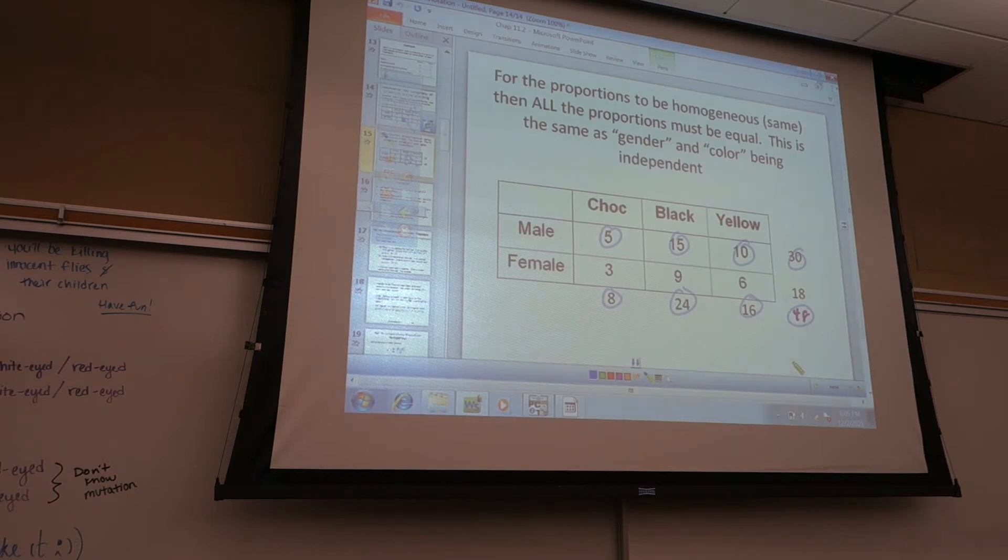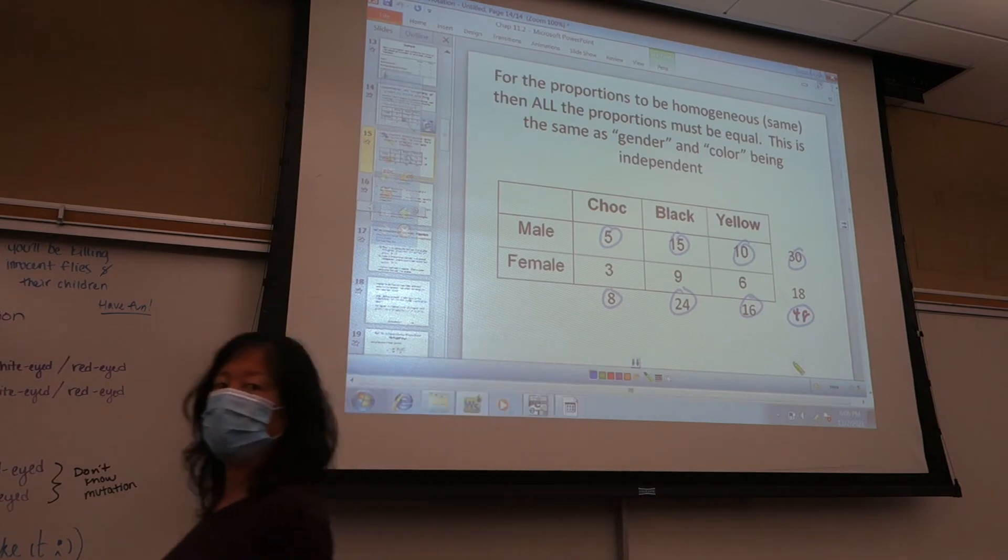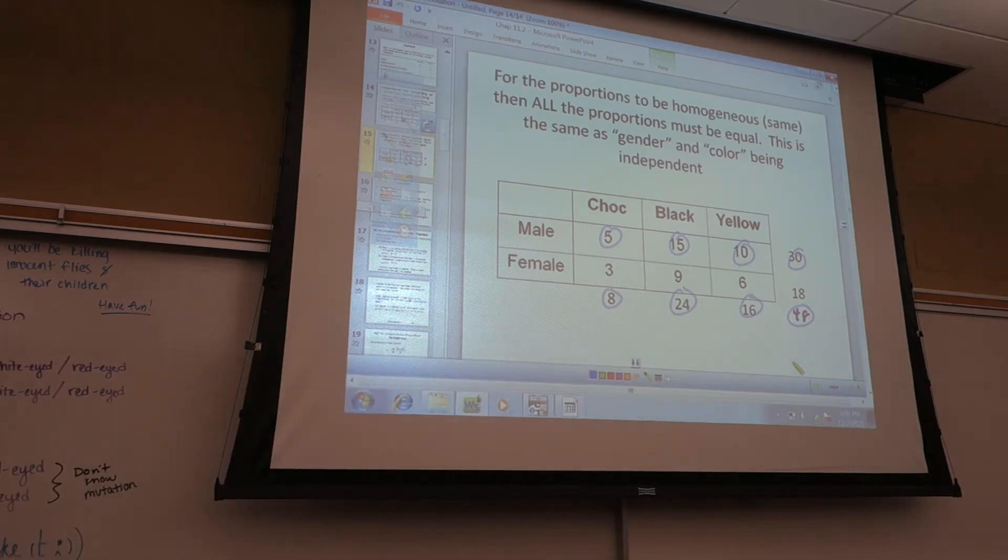What's the first one? Five over eight. Mykaila, what'd you get for the first one? 0.625. Angelina, what did you get for the next one? 0.625. Scott, what did you get for the next one? 0.625. Avery, what did you get for the last one? 0.625. All right, so all of them are equal. These are independent.